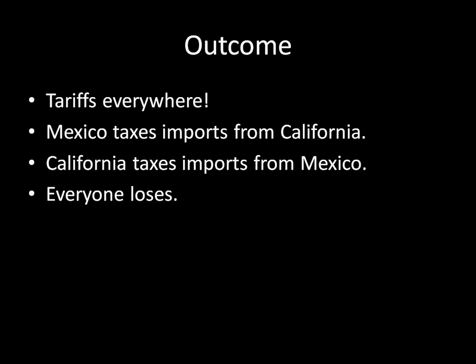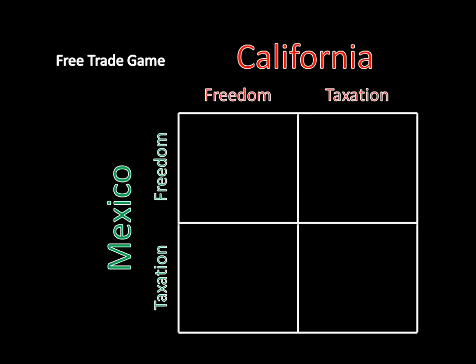To see how this works as a strategic model, let's think of this as California and Mexico each having a choice: they both choose whether to tax the other or have free trade. If California chooses freedom, it won't tax Mexican products; if it chooses taxation, it will. Likewise for Mexico. So there are four possible outcomes — two strategies for each player leads to four outcomes.